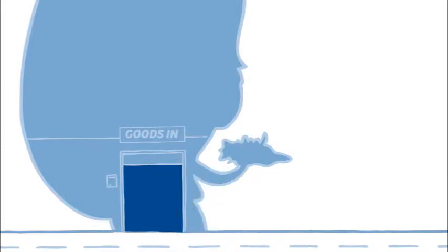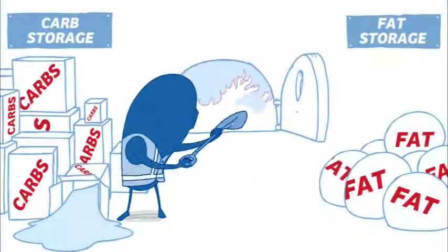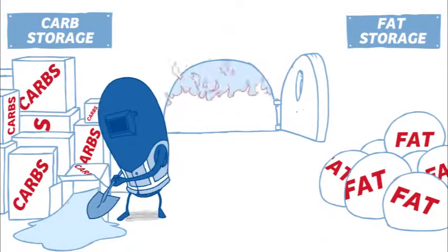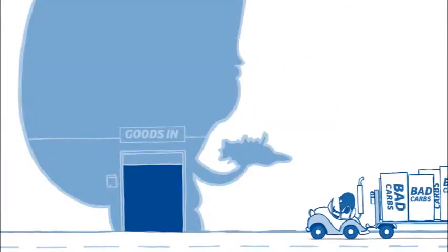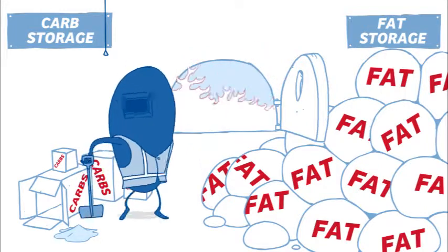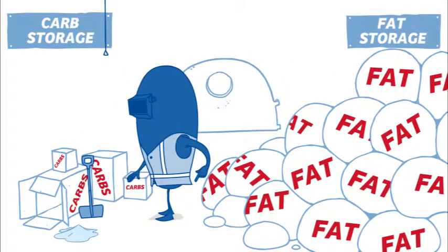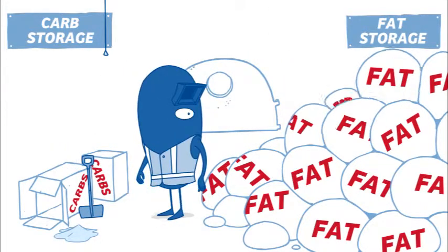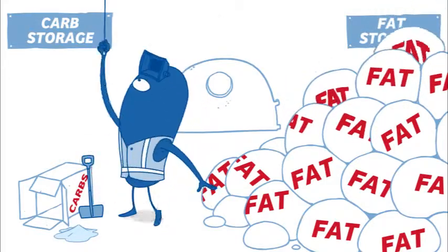Think of your body as a factory using energy which has to be replenished. When carbs are consumed, they're quickly burnt up, so more carbs are needed to keep the factory going. At the end of a busy day, when the factory shuts down, the unused carbs are transformed into fat and stored in the body as fat reserves.